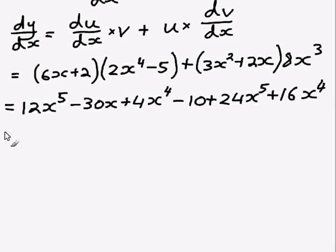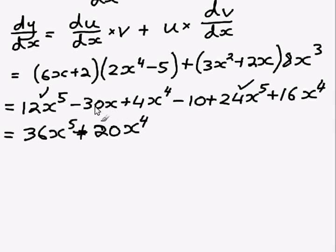So we're getting somewhere, we've just got lots of terms, now we can group terms of the same. So we've got a 12x to the power of 5 and we've got a 24x to the power of 5. Together these make up 36x to the power of 5. I'm going to put little ticks to show that we've already added those together. We have a 4x to the power of 4 and a 16x to the power of 4, so those add up to give 20x to the power of 4. We have just a minus 30x by itself, so minus 30x, and we also have a negative 10 all by itself, making sure to tick off everything, so minus 10.